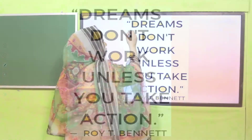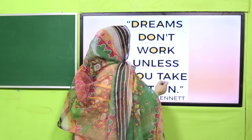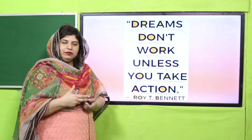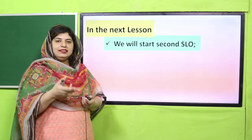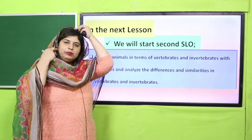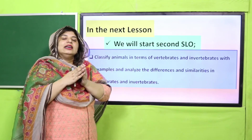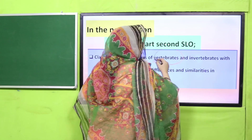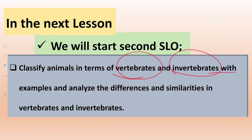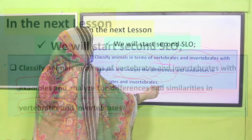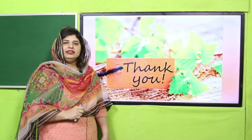At the end, I must suggest: dreams don't work unless you take action. To fulfill your dreams, you must work hard and follow what you want to achieve — work hard for that. In the next lesson, we will go for our next SLO — to classify all animals. We will classify animals into vertebrates and invertebrates, learn examples, and analyze the differences and similarities between vertebrates and invertebrates. Till then, wish you have a very great time ahead. Thank you so much and Allah Hafiz.